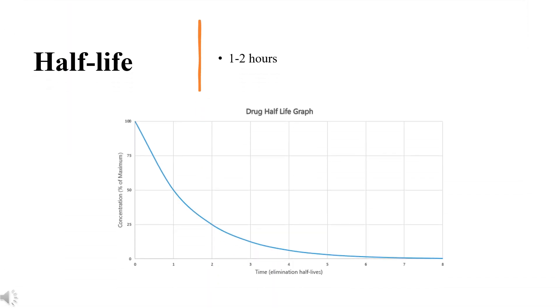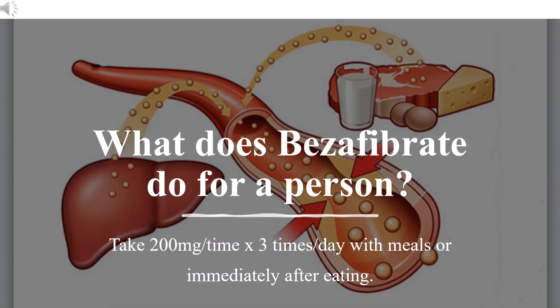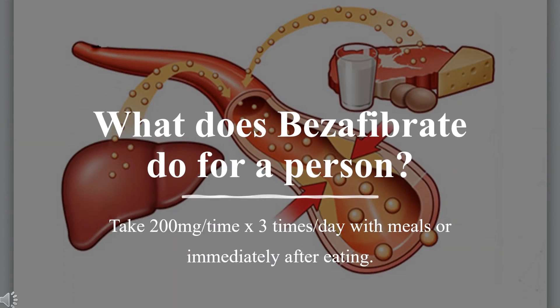Half-life: 1–2 hours. Dose: The dose of Bezafibrate depends on the age and condition of the patient. Adults should take the drug during or immediately after a meal, combined with a fat-restricted diet. The usual dosage is 200 mg per dose, taken with meals or immediately after eating. Patients can also take a single dose of 400 mg per day at the main meal or right after the main meal. The 400 mg dose is not suitable for patients with renal failure.